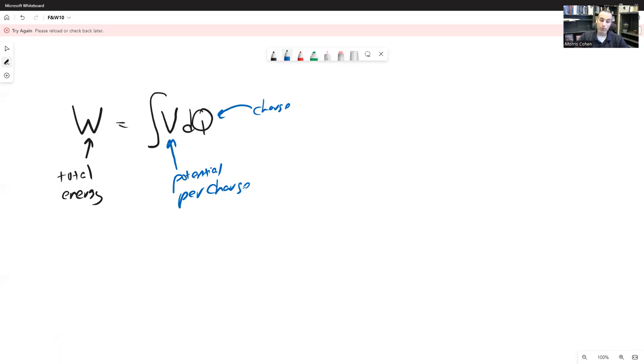In fact, we know how it increases. It increases according to capacitance. That's Q equals CV, which implies that V equals Q over C. So we can substitute that in.